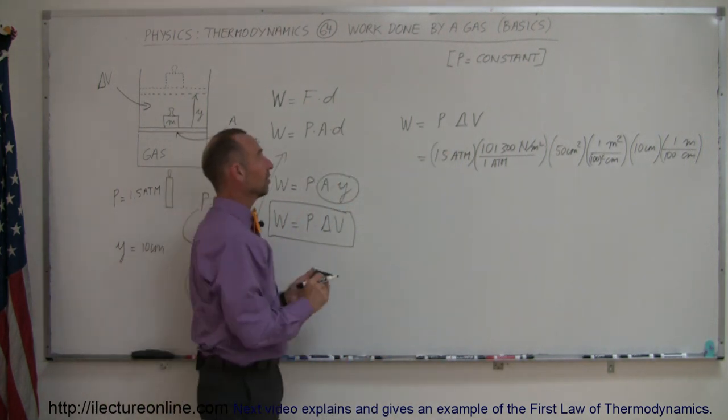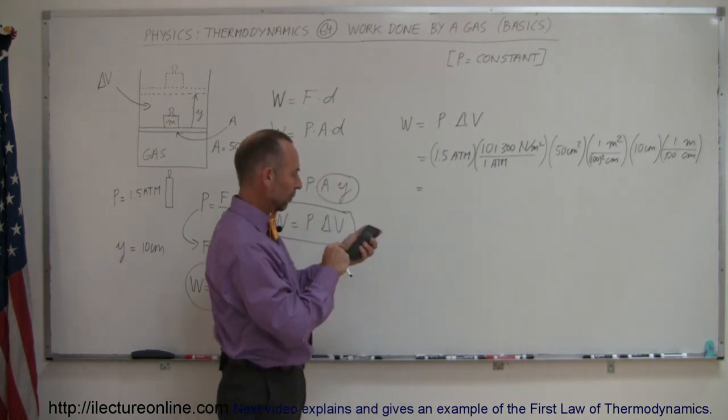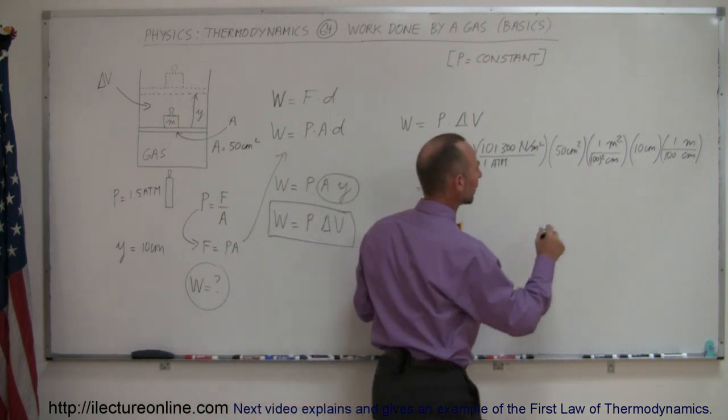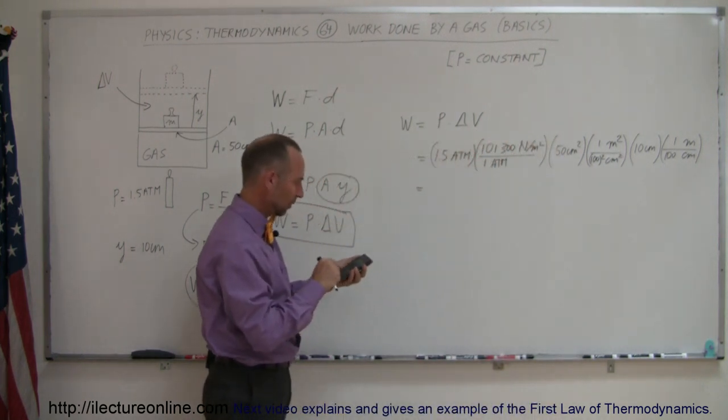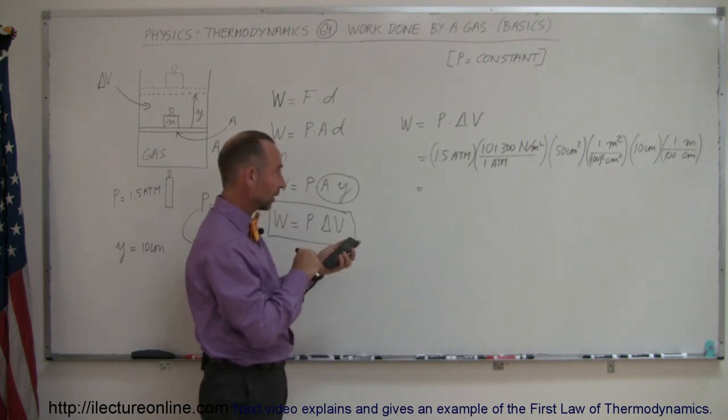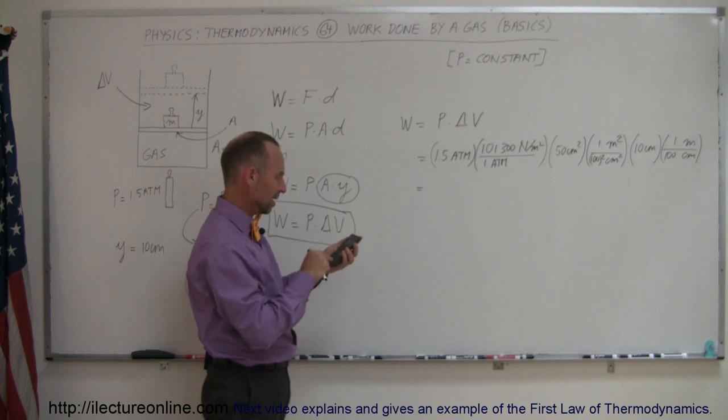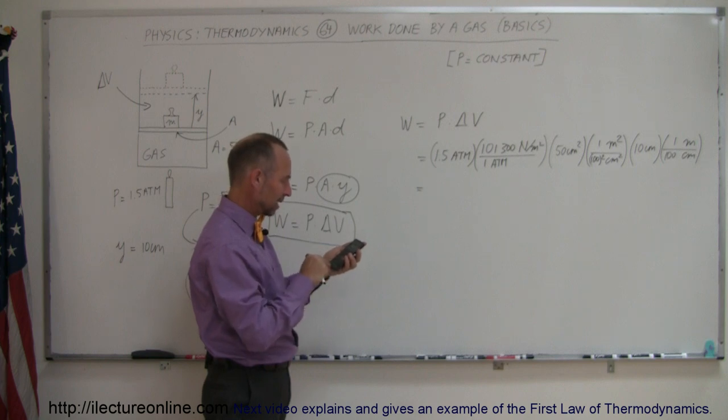Now, using my calculator, let's see what the work done is in this case. We have 1.5 times 101,300 times 50, divided by 100 squared, and then divided by 100 again.